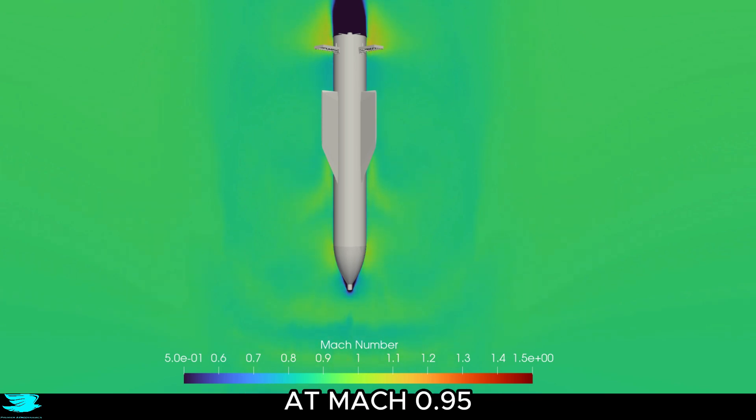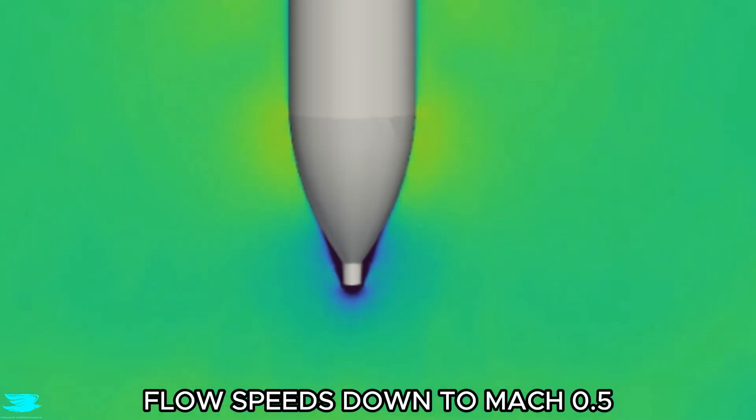At Mach 0.95, ahead of the projectile, a shockwave forms. The flow after that is a little slower and actually, its nose sees flow speeds down to Mach 0.5.